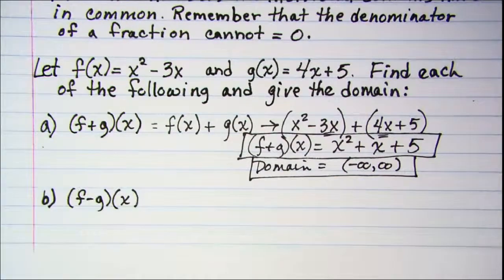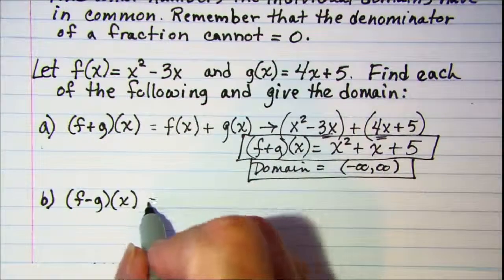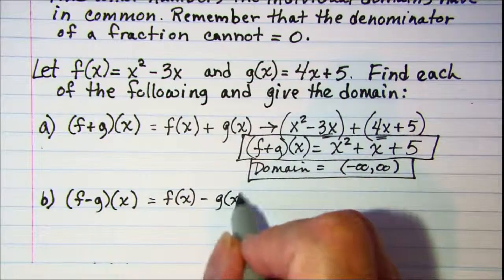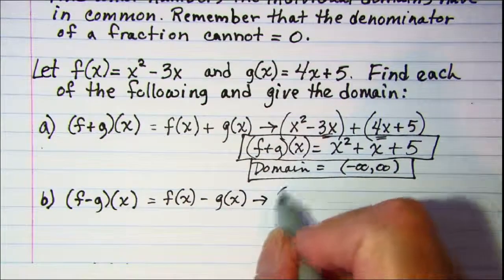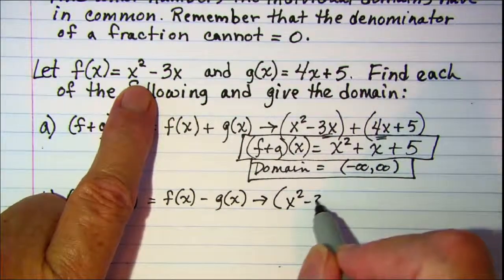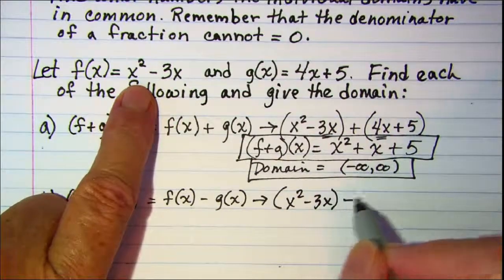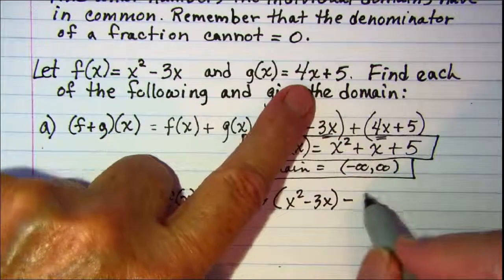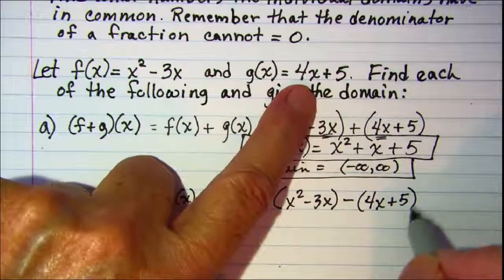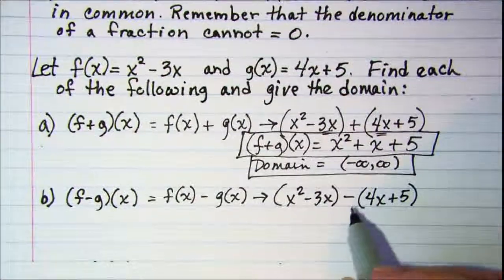Next, let's look at f minus g. Again that's equal to f of x minus g of x. So we have f of x which is x squared minus 3x, subtract g of x which is 4x plus 5.